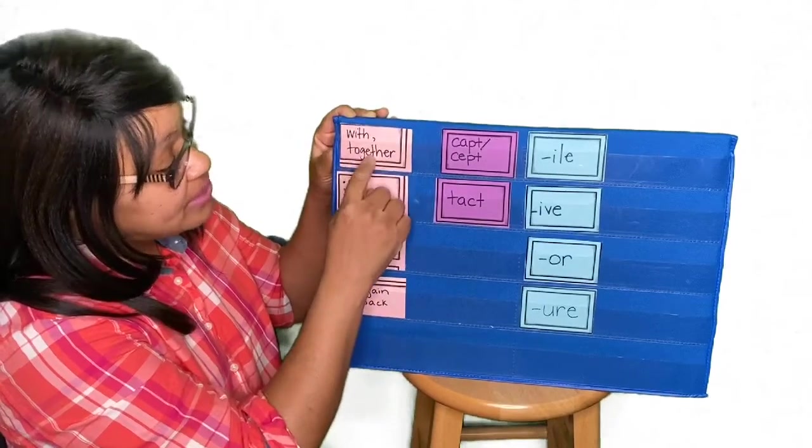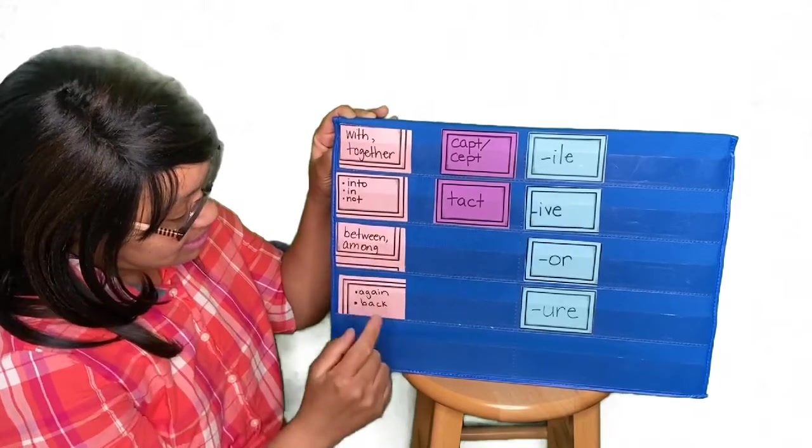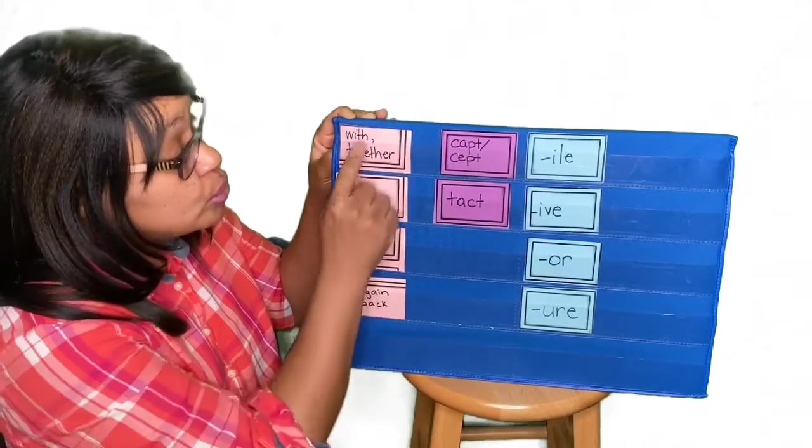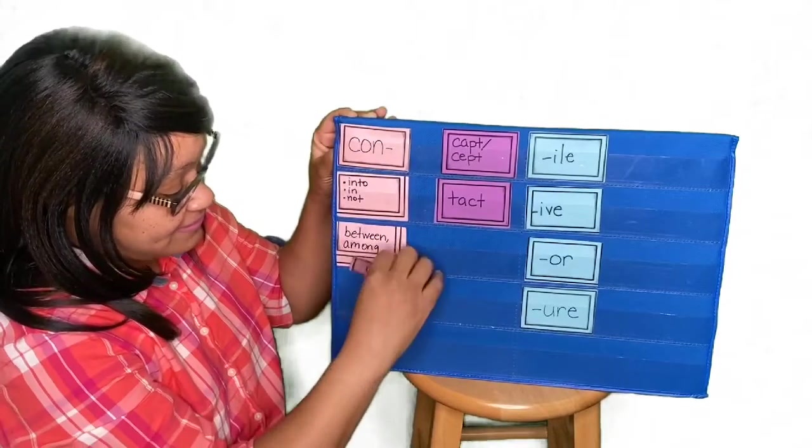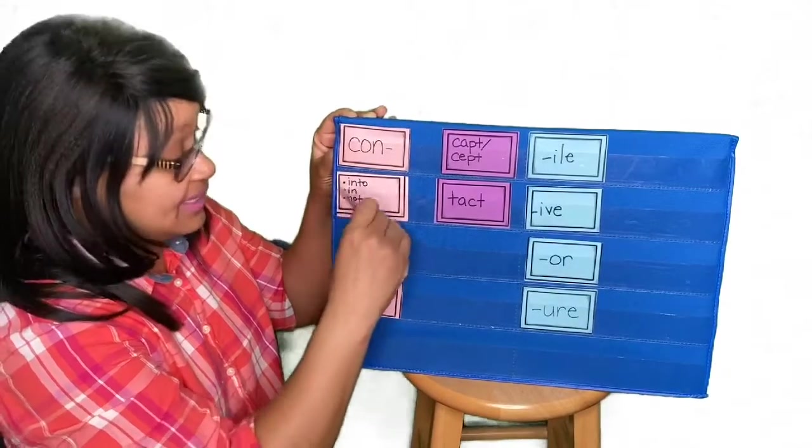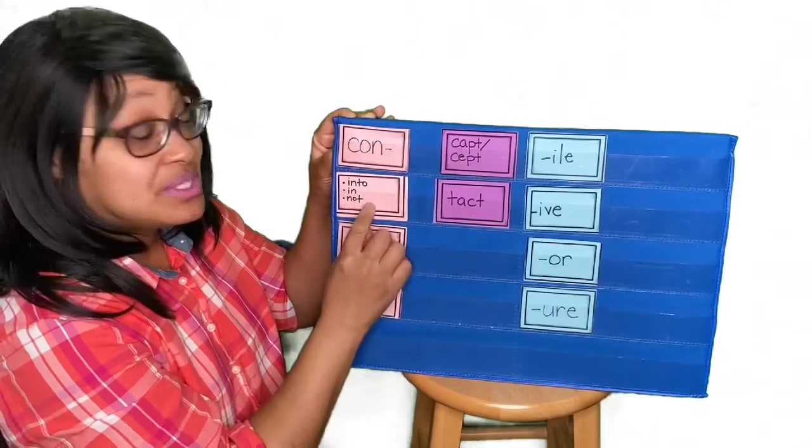So we have with or together, between, among, again, and back. These are dual prefixes. Then we have a prefix that has three meanings. So this is a multi-prefix.